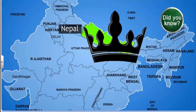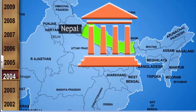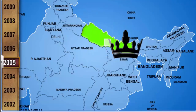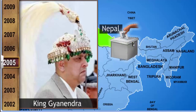Did you know India's neighbor Nepal was also a monarchy for about 239 years? In 2005, King Gyanendra took complete control of the government, dismissing the elected parliament following opposition to his direct rule. He was peacefully deposed in 2008.